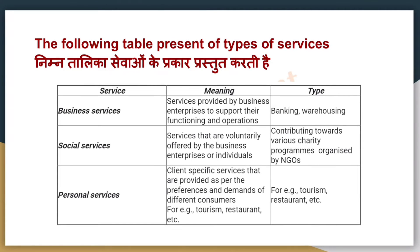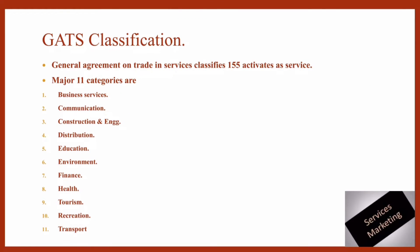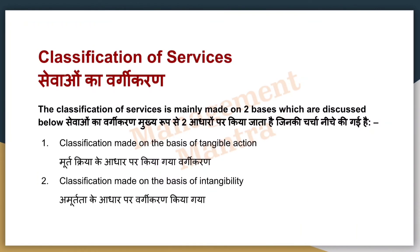We have these three types: business services for daily functioning and operations — banking, warehousing. Social services include voluntary business offers and charity programs like NGOs doing something for society. Personal services are provided specific to client demand, for example tourism and restaurants. Regarding GATS classification, the General Agreement on Trade in Services has divided 155 activities into 11 major categories: business, communication, construction and engineering, distribution, education, environment, finance, health, tourism, recreation, and transport.